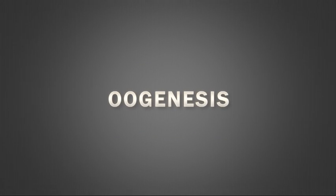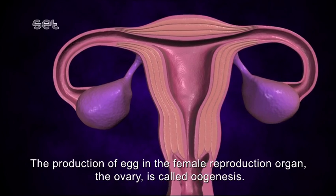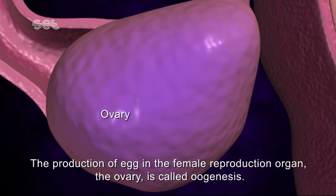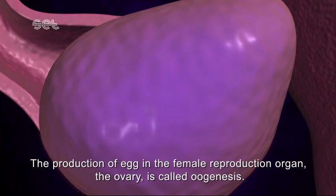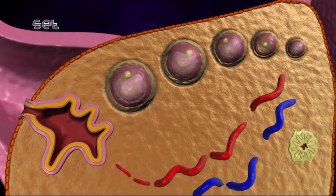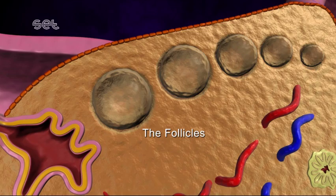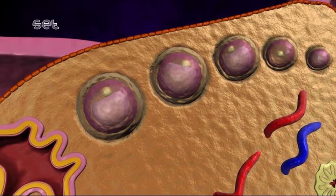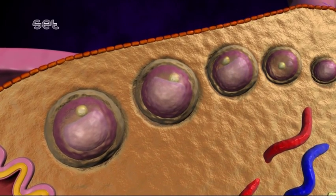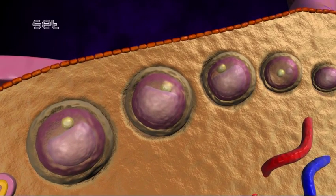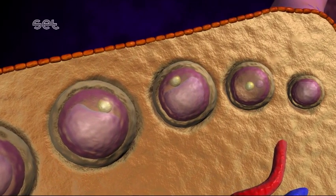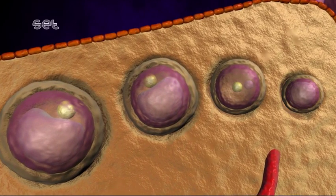Oogenesis is the production of eggs in the female reproductive organ. The production of reproductive cells in females occurs during certain periods. The eggs are protected and nourished by the ovary, which contains a large number of follicles — each with one primary oocyte. Every month, one egg cell matures and is released into the fallopian tube to allow fertilization. The eggs are formed from the 2n parent cell found in the ovaries.